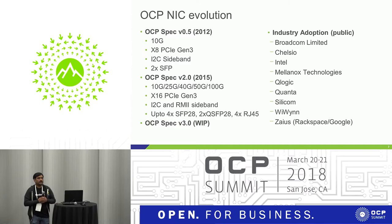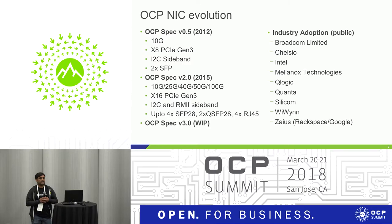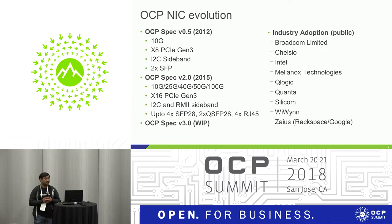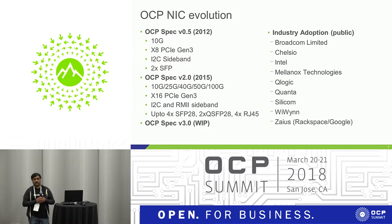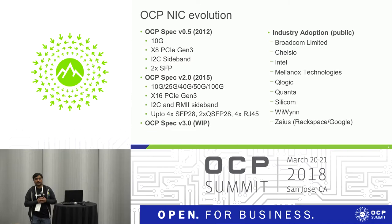How did OCP NIC evolve? In 2011 the problem was identified. The first spec, version 0.5, has x8 PCIe Gen3 and supports 10 gig. The spec was published in OCP around 2012. In 2015, a second version was published supporting up to 100 gig with more PCIe lanes. On the sideband, the original version had only I2C, and NCSI was added for faster transfer. The next version — OCP NIC 3.0 — is coming soon. Looking around the booths you can find many OCP NICs made to the spec, showing strong industry adoption for this form factor.